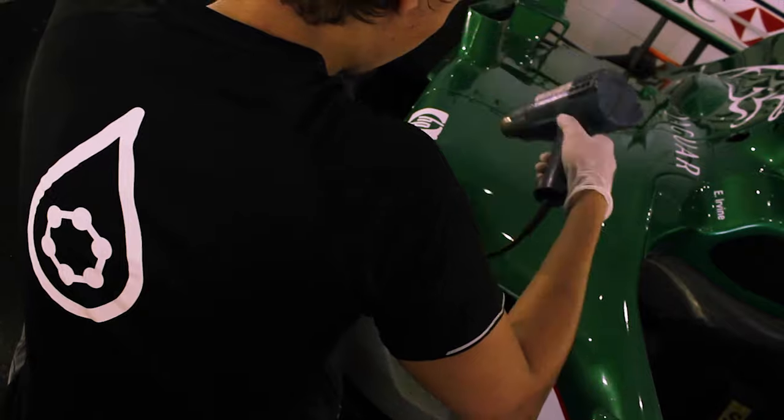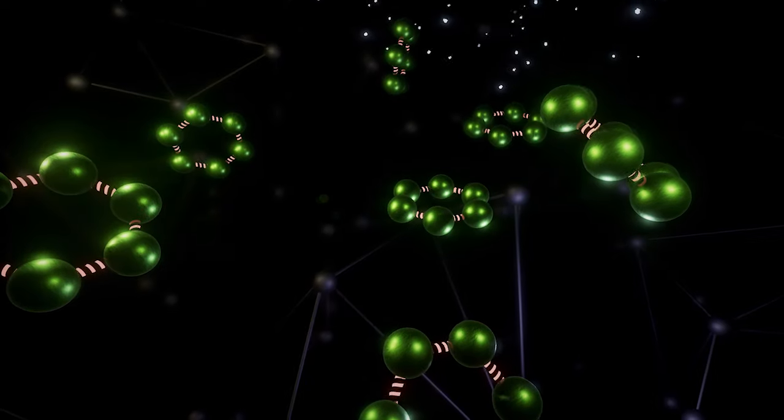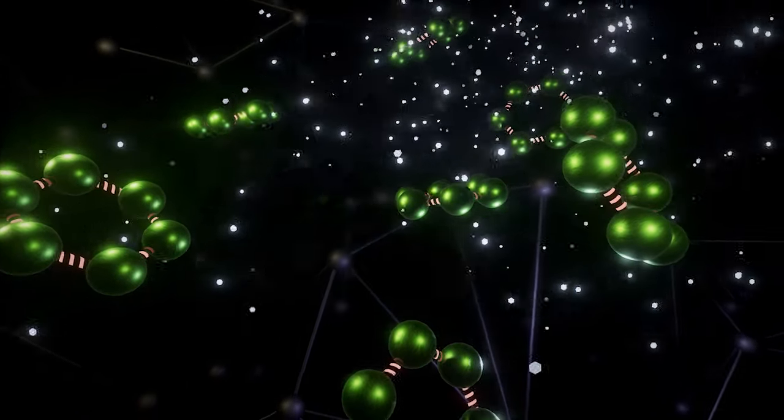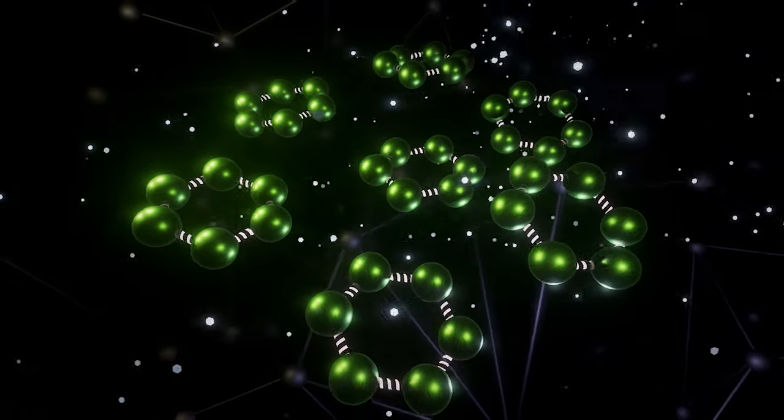When our self-healing coating is subjected to temperatures above 60 degrees Celsius, it triggers a self-leveling effect. The nanomagnets on the ends of the ceramic chains begin to vibrate at very high frequencies, pulling themselves together and leveling out surface imperfections.